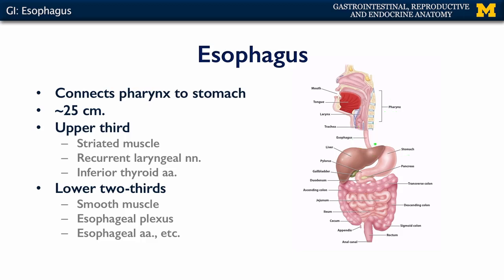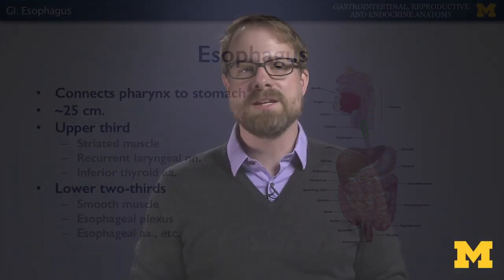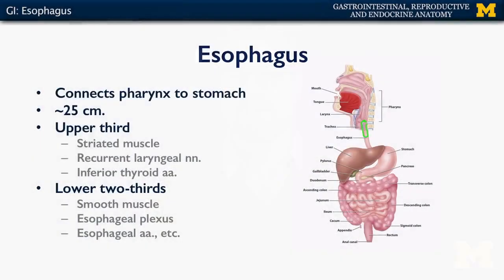That upper third of the esophagus — the cervical portion — is unique in that it consists largely of striated or skeletal muscle. The striated muscle, though, is not voluntary. It's under the control of the autonomic nervous system, and it activates during swallowing, or the deglutition reflex.